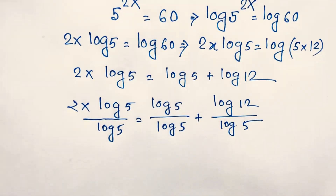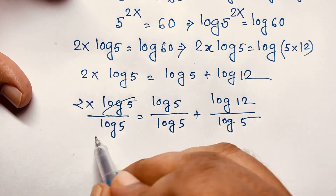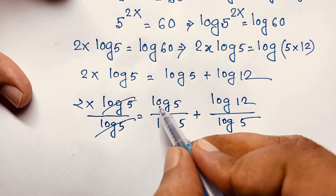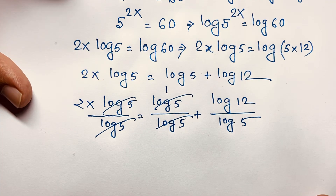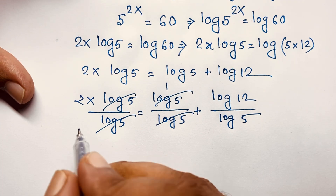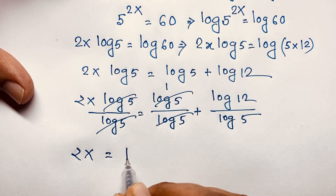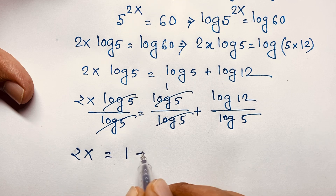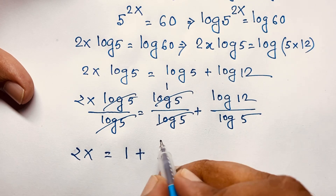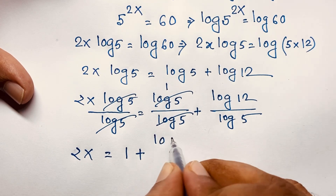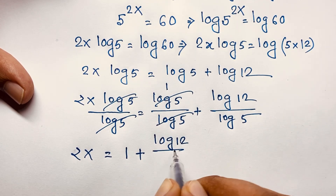You can see that log 5 over log 5 cancels out to equal 1. So we find 2x is equal to 1 plus log 12 over log 5.